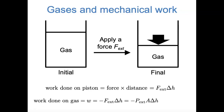We can recall that pressure is a force per unit area, so we can express F external as P external times A, the cross-sectional area of the piston. This external pressure could be the atmospheric pressure or some external pressure applied by a weight on the piston. We can group A times ΔH into a ΔV, a change in volume of the piston. So although we looked at a specific cylindrical piston case, the general expression is that the work done on the gas is negative P external times ΔV.